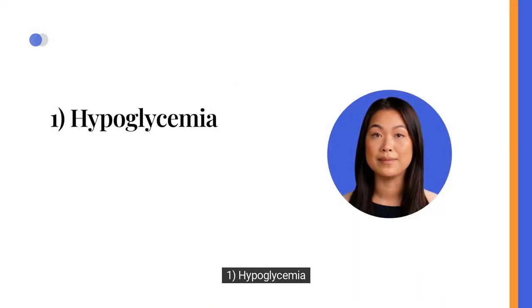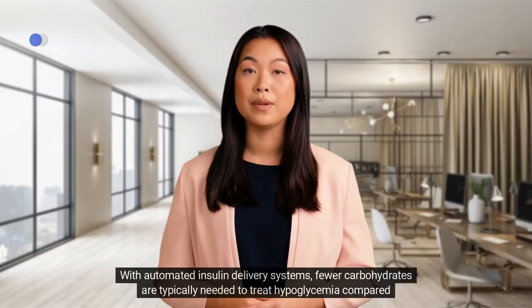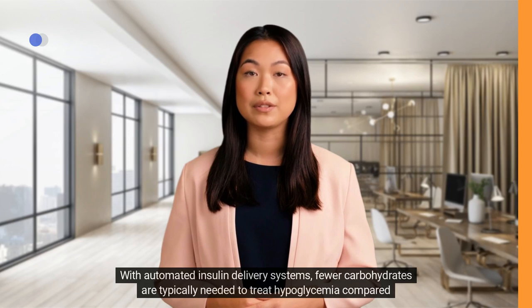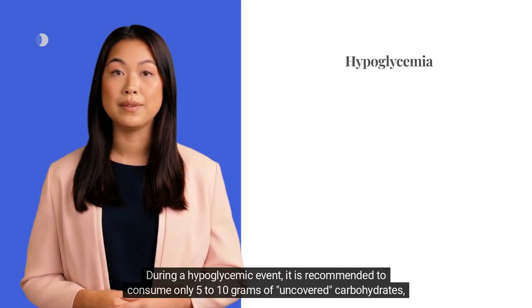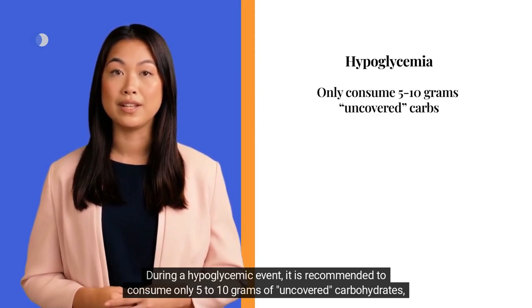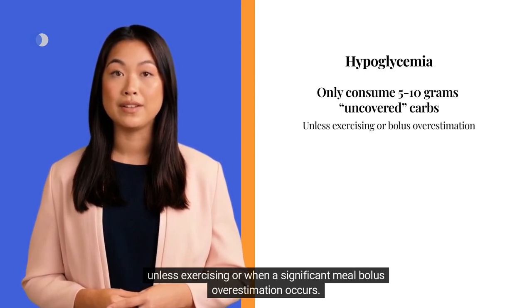1. Hypoglycemia. With automated insulin delivery systems, fewer carbohydrates are typically needed to treat hypoglycemia compared to traditional insulin therapy. During a hypoglycemic event, it is recommended to consume only 5 to 10 grams of uncovered carbohydrates, unless exercising or when a significant meal bolus overestimation occurs.